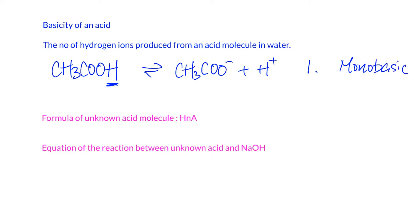If we don't know the basicity of an acid, it is difficult to write down the equation or formula for it. So for an unknown acid, we can use HₙA to indicate this — where n equals 1 for monobasic, 2 for dibasic, or 3 for tribasic. Even if we don't know the rest of the formula, we use A, capital letter A, to represent the anion part.